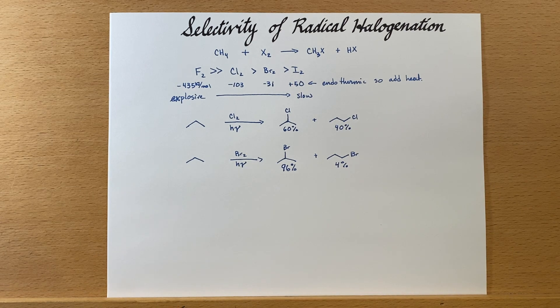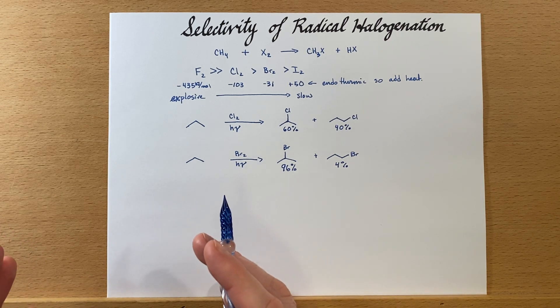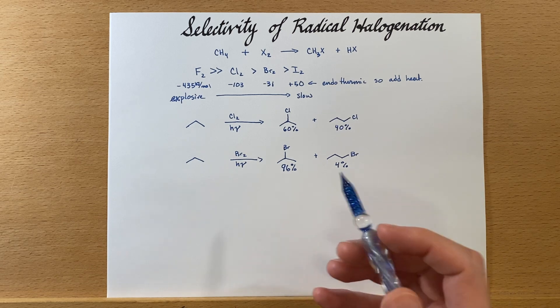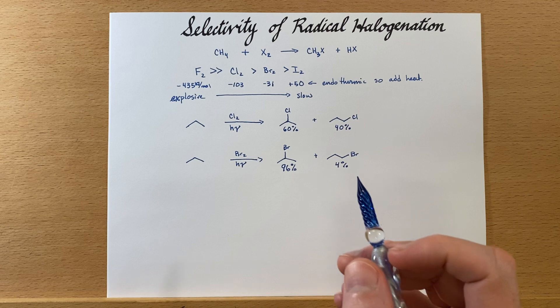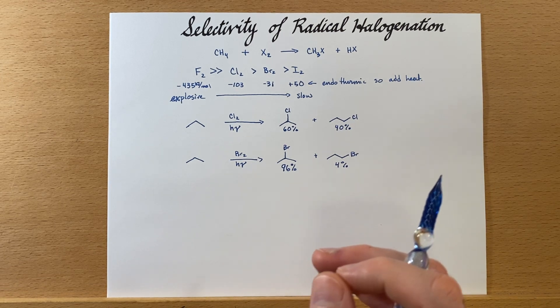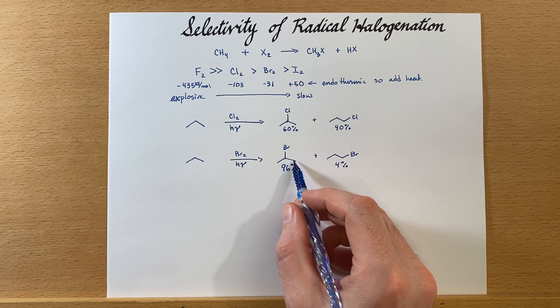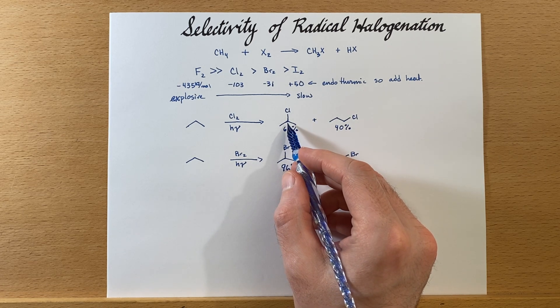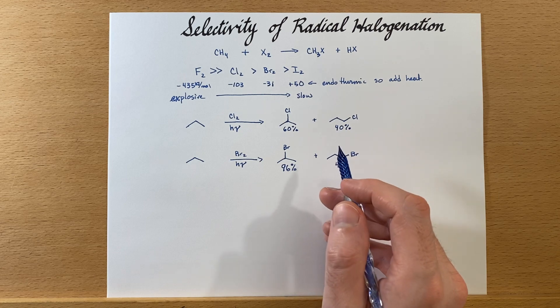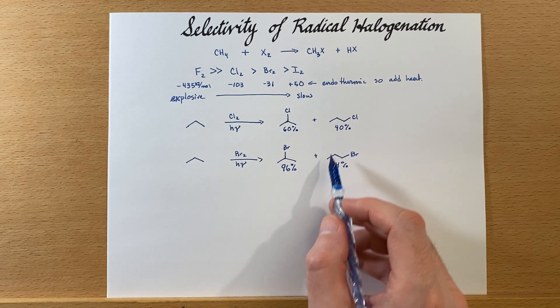Remember, any time that we are able to run a reaction much slower or not have it very exothermic, we will have more control. There will be one pathway that is thermodynamically and kinetically easier to take. In this case, it's much easier to take the secondary pathway. Because the chlorine reaction is so exothermic, it's much quicker overall. So the energy of activation difference between these two is much smaller than the difference for bromine.